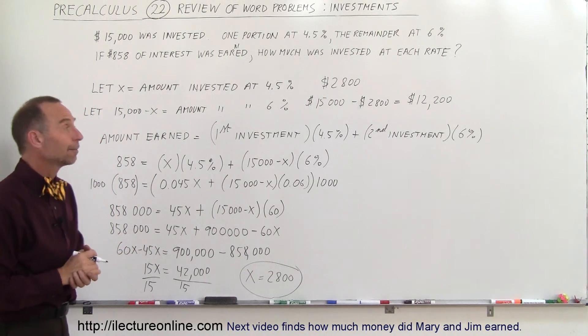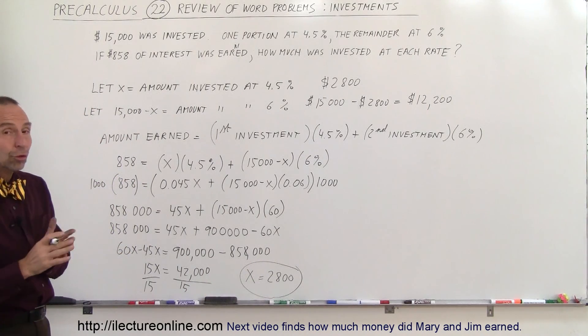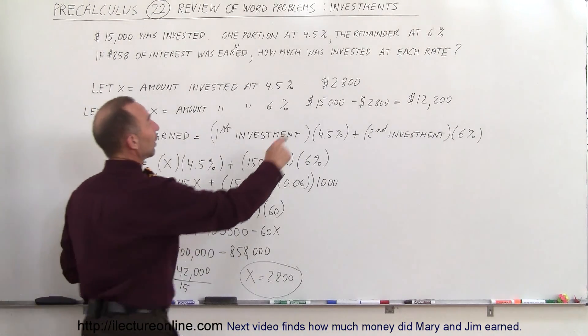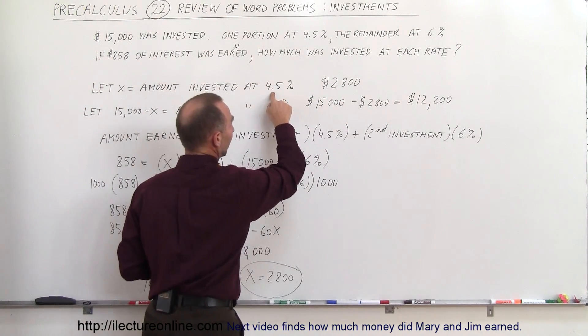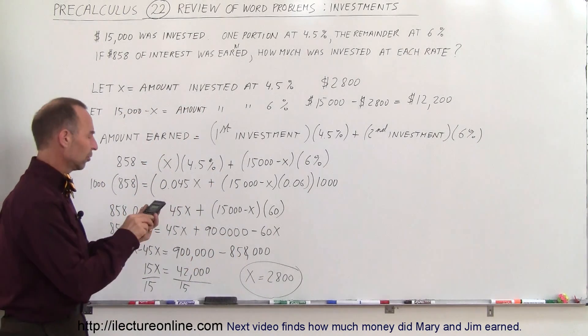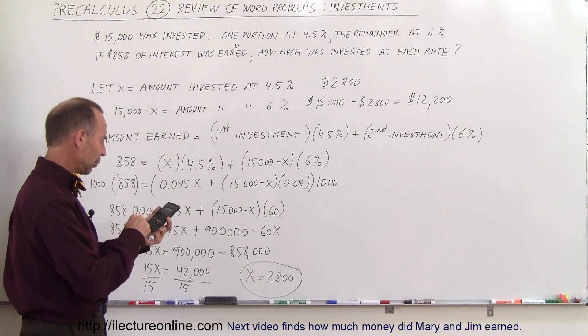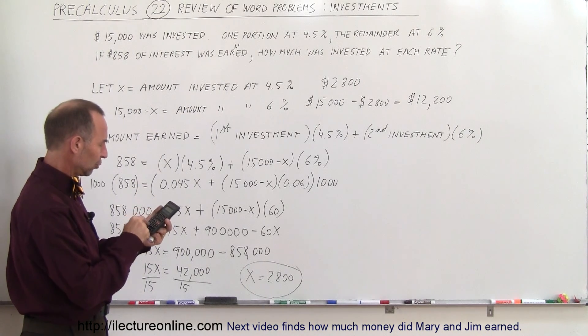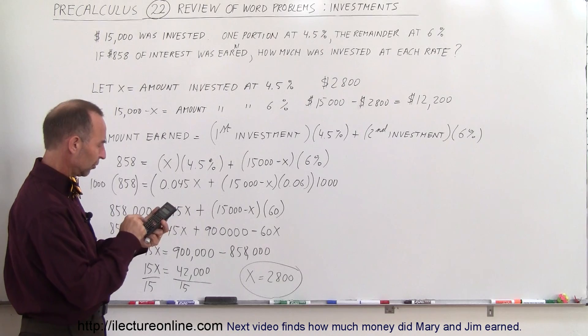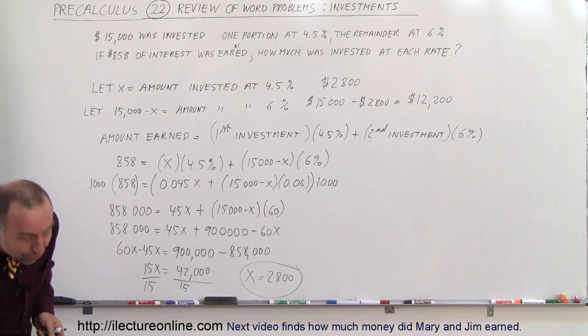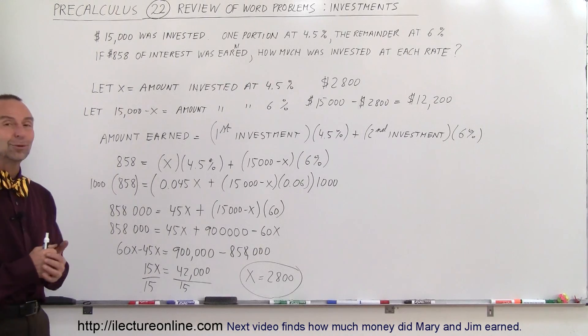And that's how we figured that out. Now what you could do, if you want to make sure you did this correctly, we can then multiply 2,800 times 4.5% and 12,200 times 6% to make sure we get that right. So let me do that. So 2,800 times 0.045 plus, then we have 12,200 times 0.06 equals, sure enough, 858. We did it correct. Those are the correct answers.